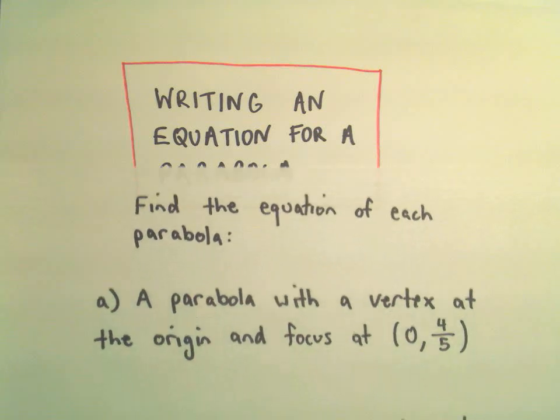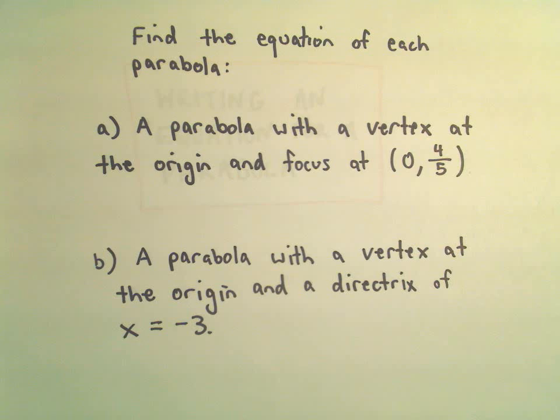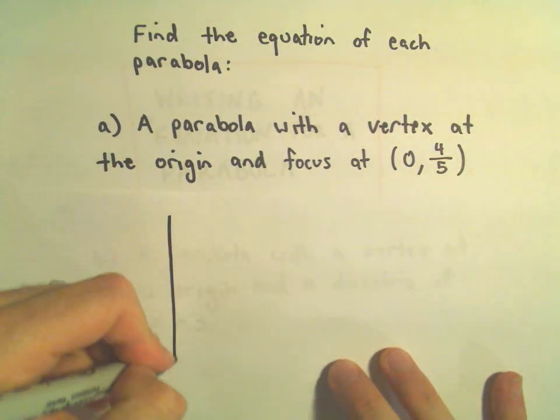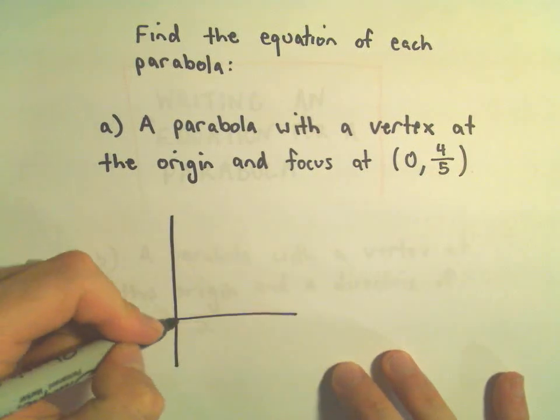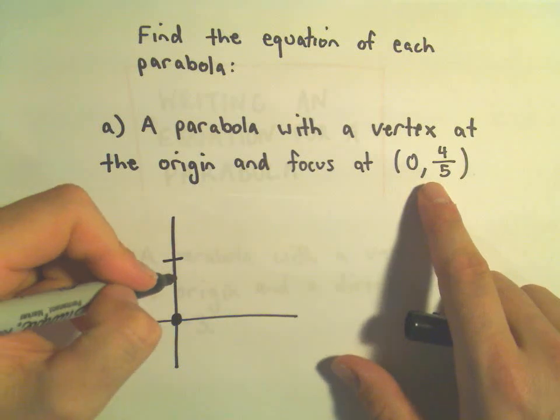Alright, in this video I'm going to find an equation for a parabola that satisfies a couple conditions. In the first one, we want the conditions to be that the vertex is sitting at the origin, so zero, zero, and the focus is sitting here at zero four-fifths.